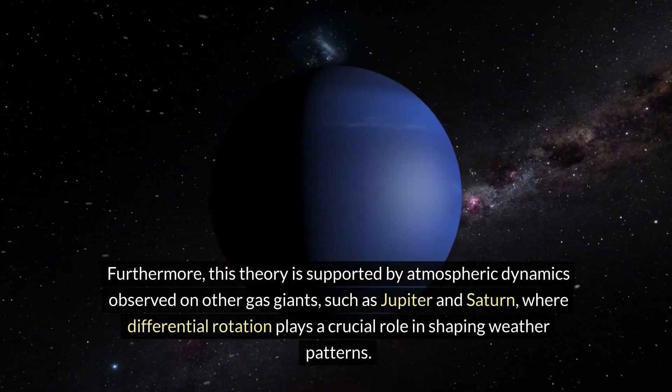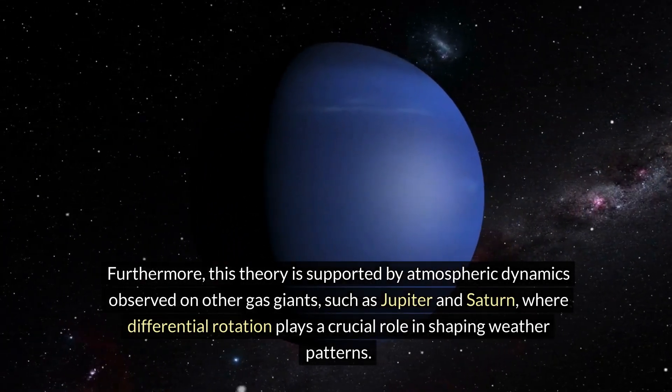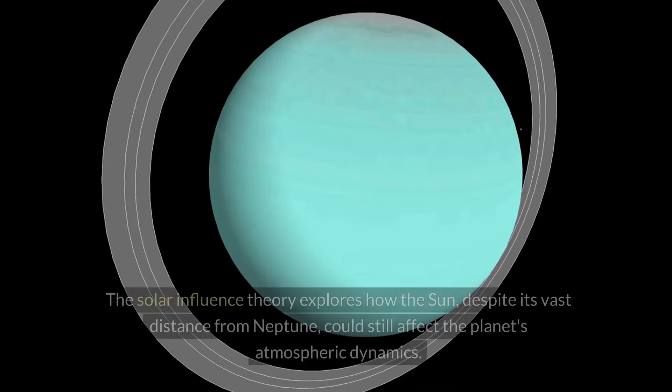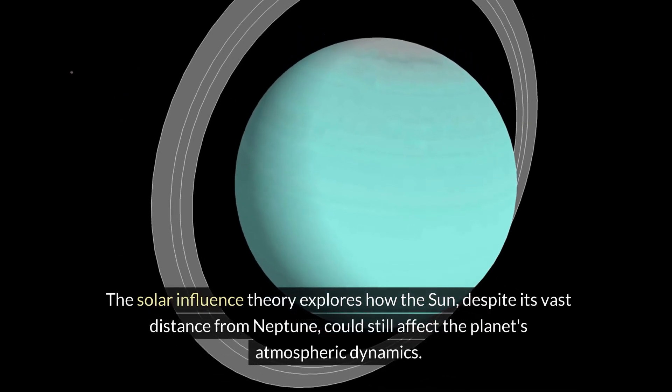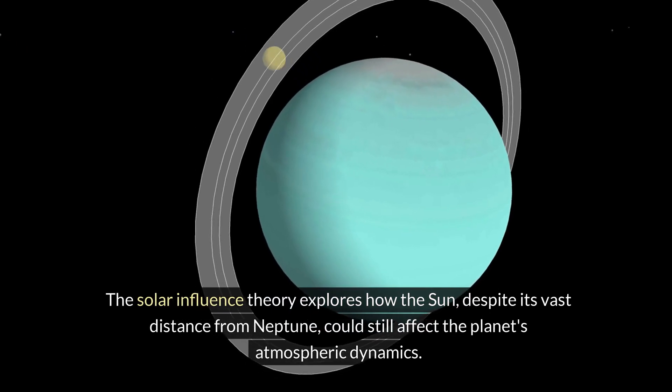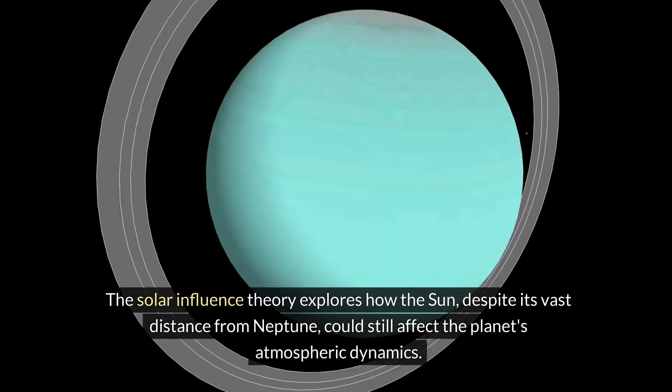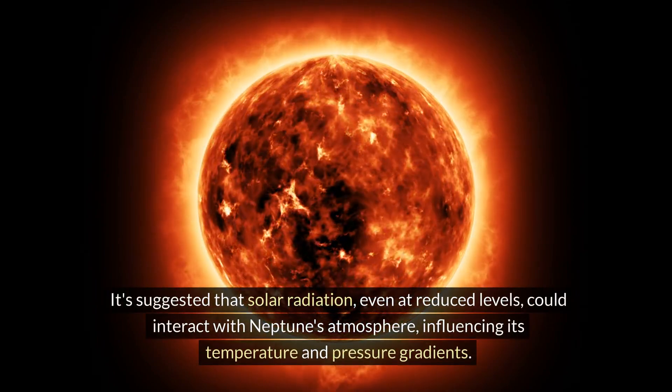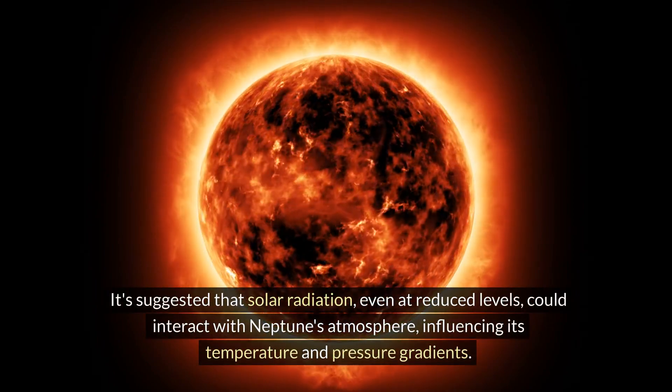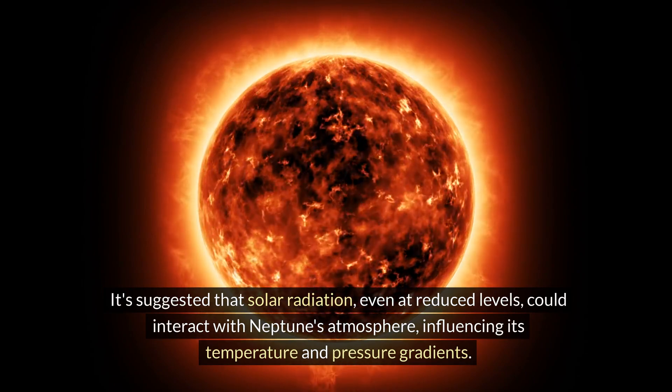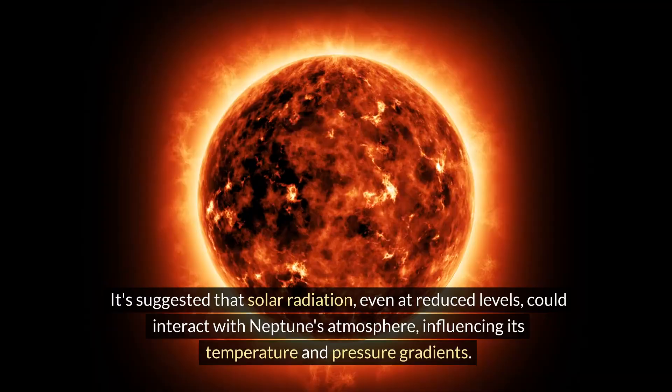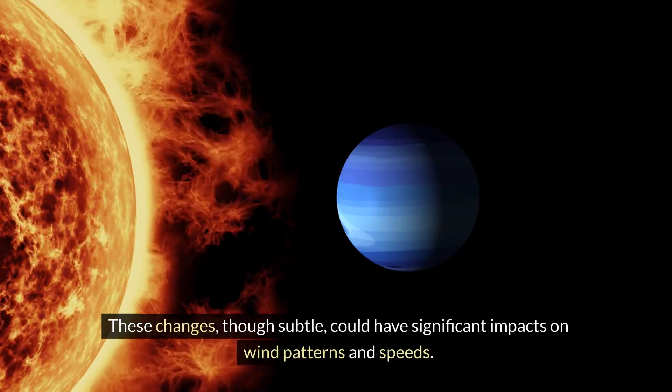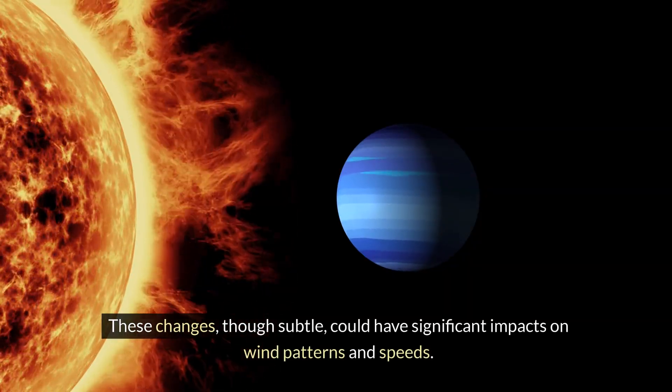Solar influence: The solar influence theory explores how the Sun, despite its vast distance from Neptune, could still affect the planet's atmospheric dynamics. It suggested that solar radiation, even at reduced levels, could interact with Neptune's atmosphere, influencing its temperature and pressure gradients. These changes, though subtle, could have significant impacts on wind patterns and speeds.